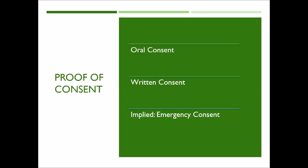Proof of consent can be established in three different ways: oral consent, written consent, or the implied emergency consent described earlier. It's often best to have written consent because that can be relied upon at a later time if there's a court issue. It's a document that's retrievable, versus a person who witnessed an oral consent who may not be available later to confirm they recall that event.